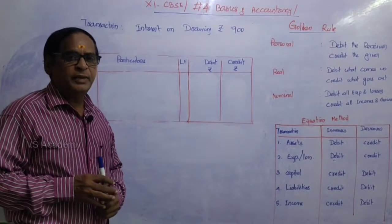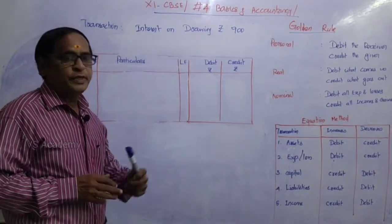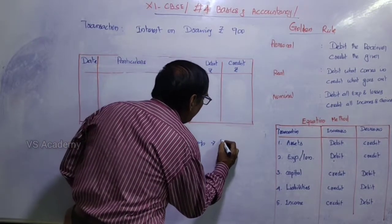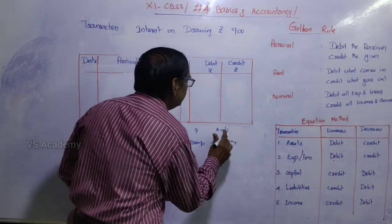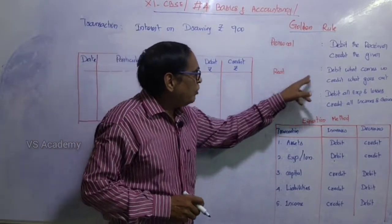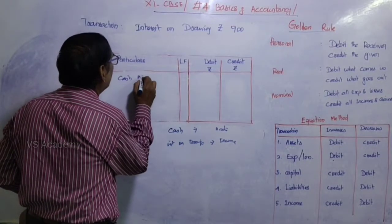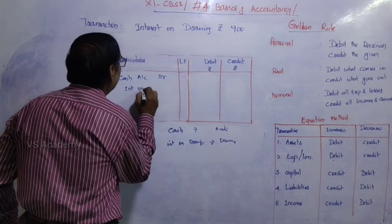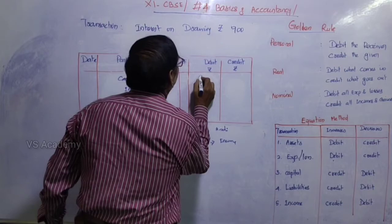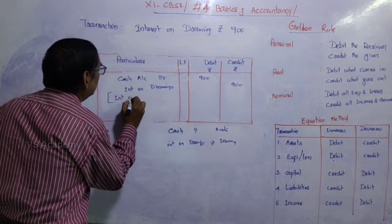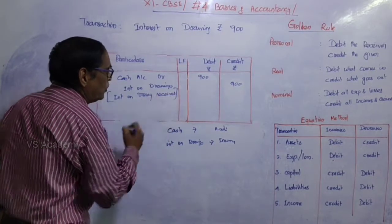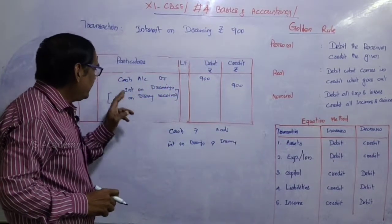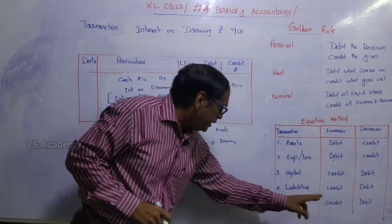Interest on drawings of ₹900 is received in cash. Cash is an asset — according to the real account rule, debit what comes in — so cash account is debited ₹900. Interest on drawings is income — according to the nominal account rule, credit all incomes and gains — so interest on drawings account is credited ₹900. Under the equation method: increase in asset (cash) is debited; increase in income (interest on drawings) is credited.